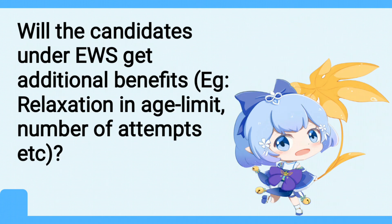Will candidates under EWS category get additional benefits like relaxation in age limits or number of attempts? There are no such proposals — candidates who fall under the Economically Weaker Section will just get the 10% reservation quota. There will be no extra relaxation in age limit or number of attempts; it would be the same as those of candidates in the open merit, i.e., general category.